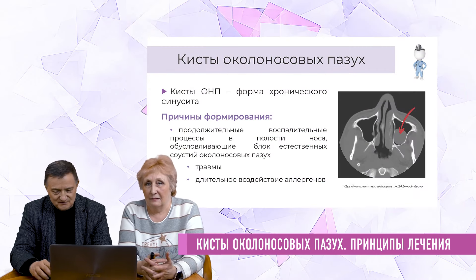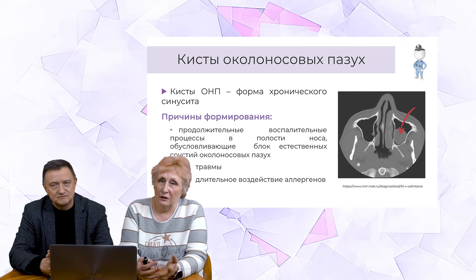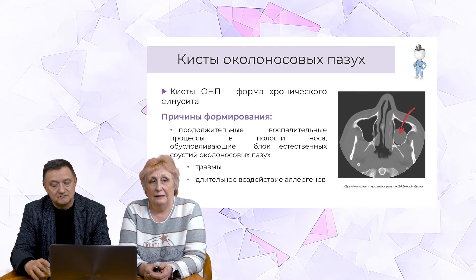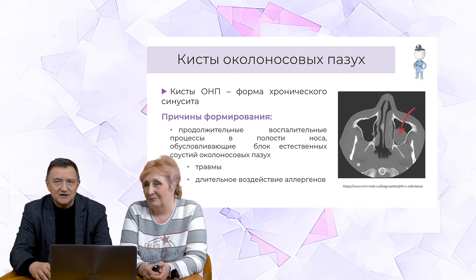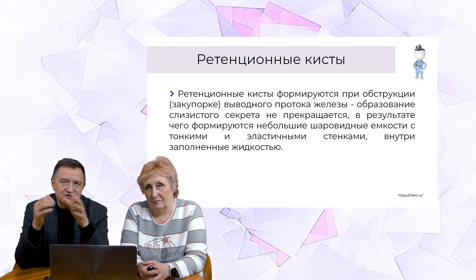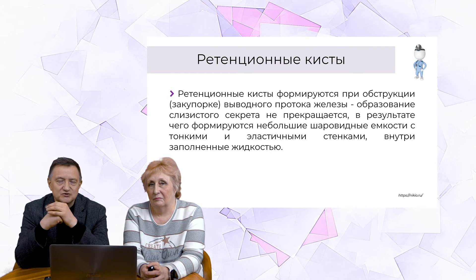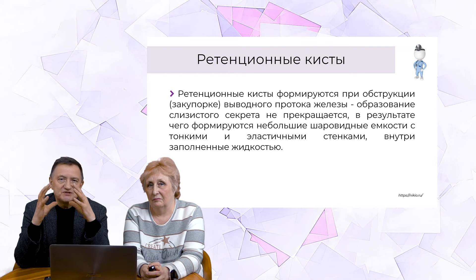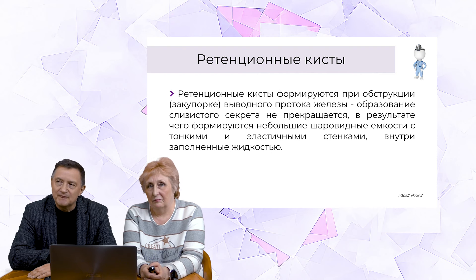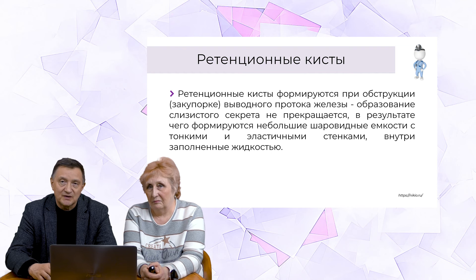Кисты около носовых пазух — это, как правило, ретенционные кисты, которые возникают либо на фоне какого-то хронического воспаления, либо на фоне аллергических процессов, либо при травмах. Их формирование обусловлено тем, что закупоривается слизистая железа, которая непрерывно вырабатывает слизь. При разных составляющих отток её может быть нарушён. Слизь вырабатывается, а выброса в окружающее пространство нет, и происходит накопление в подслизистом слое этой жидкости — образование мешочатой структуры, ретенционная киста около носовых пазух.